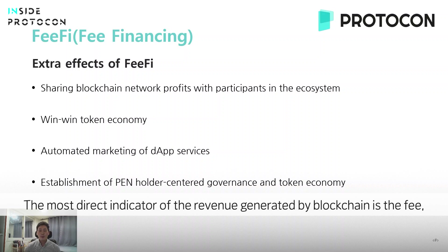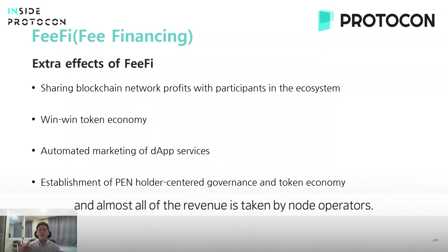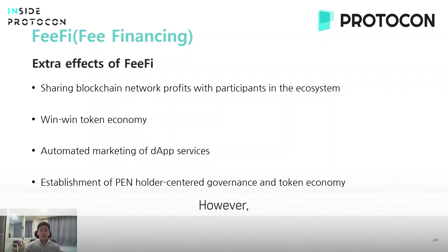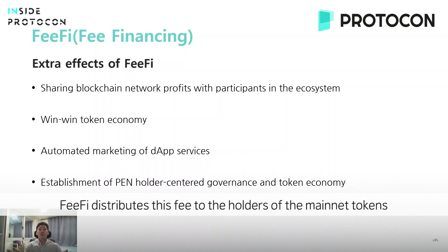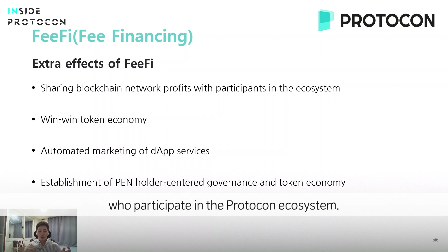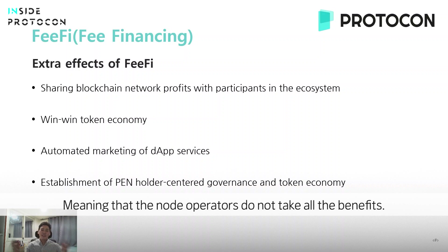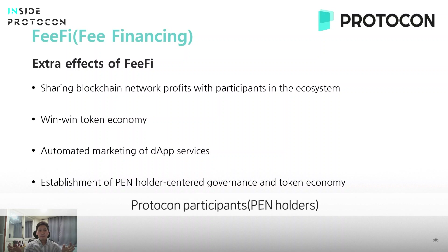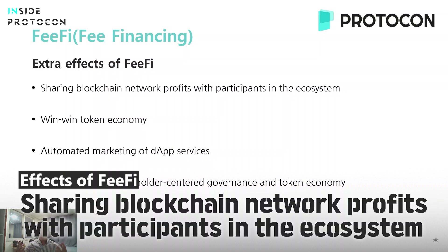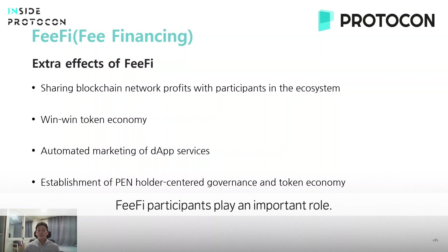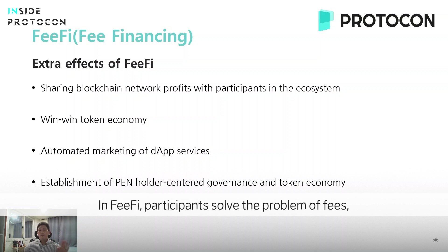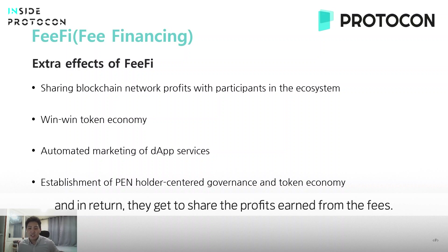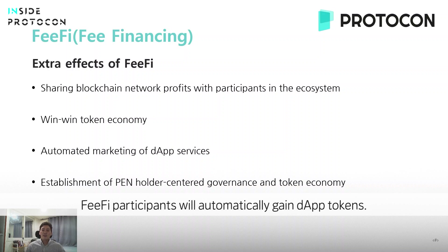A direct indicator of the revenue generated by a blockchain is fees, and almost all of the revenue is taken by node operators. However, fee-fi distributes these fees to the holders of the mainnet tokens who participate in the protocol ecosystem. So node operators don't take all those benefits — pen holders will share the network profits. Fee-fi participants play a really important role: they solve the problem of fees, the most difficult problem in blockchain, and as a return, they get a share of the profits earned from the fees.